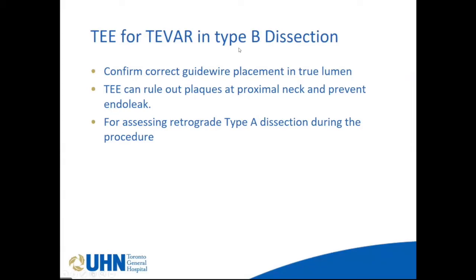For TEE during TEVAR in type B dissection: first, to confirm correct guide wire placement in the true lumen; second, to rule out plaques at the proximal neck to prevent endoleak — if there's a large atheroma, the surgeon can avoid that part of the aorta; third, to assess for retrograde type A dissection during the procedure. In our last case, this was the primary reason TEE was requested — they were deploying the stent very high, almost covering the left subclavian artery, and wanted to know if a retrograde type A dissection was created during stent deployment.